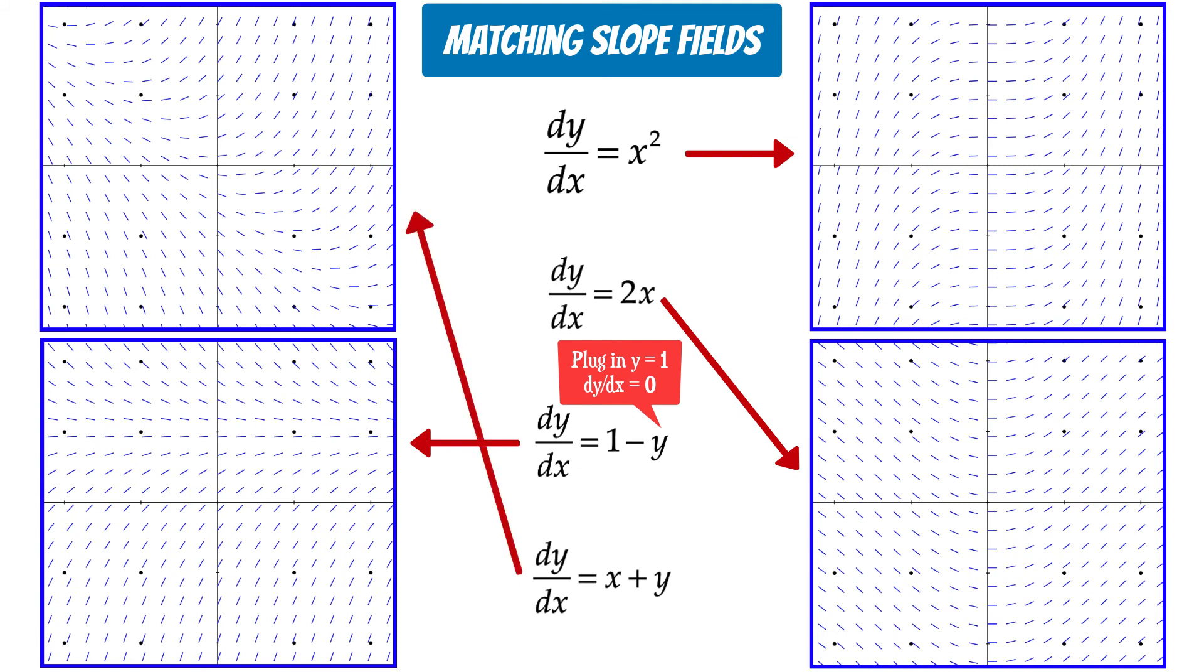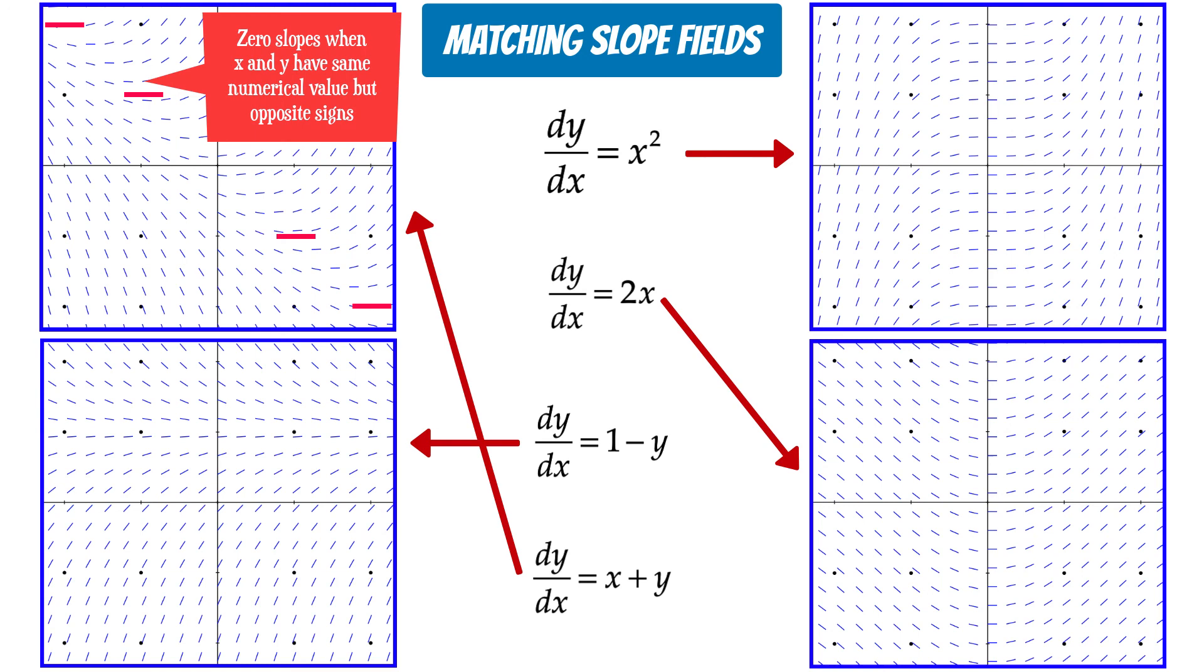By process of elimination, that means dy/dx equals x plus y is the upper left corner. But we can confirm this as well. One way to do this is by plugging in coordinates and getting a dy/dx value and verify graphically that the slope matches the dy/dx value. Notice that if we plug in x and y values with the same numerical value but opposite signs, the slope is 0. And we can verify this graphically.